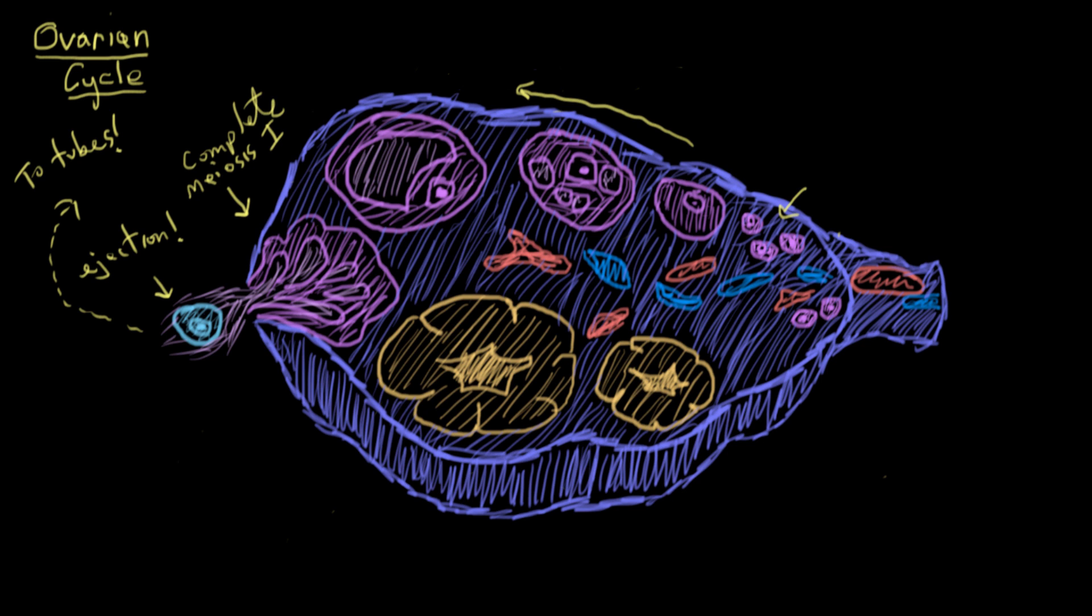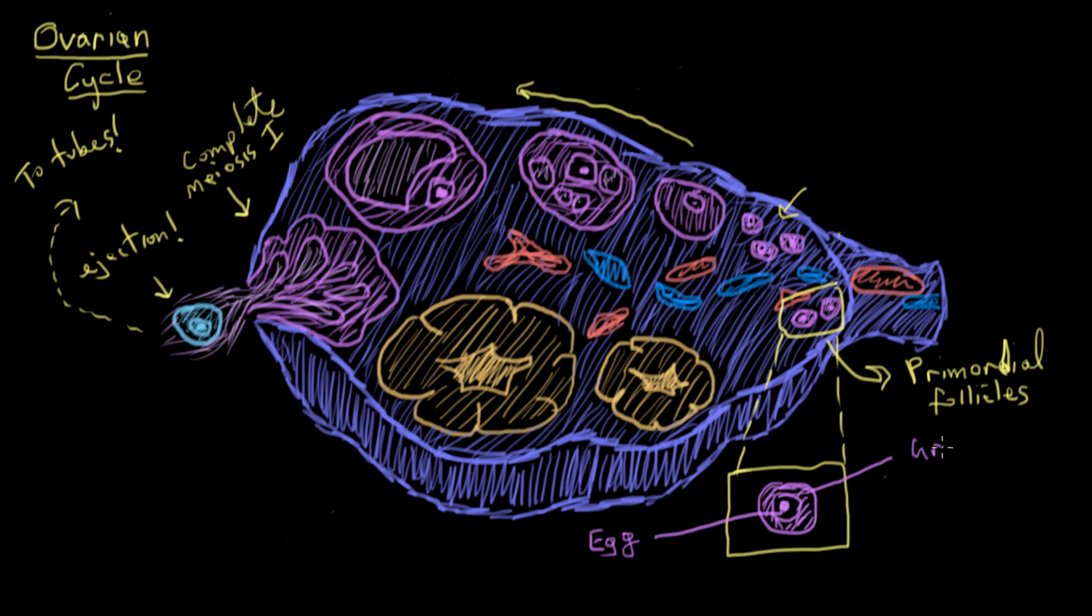So let's start from the beginning. Inside the ovaries, eggs develop in structures called follicles, these purple circles here. And they start off as primordial follicles. What a follicle is, I'll just blow that up for you, it's one primary oocyte, so an egg cell, surrounded by a layer of cells called granulosa cells.